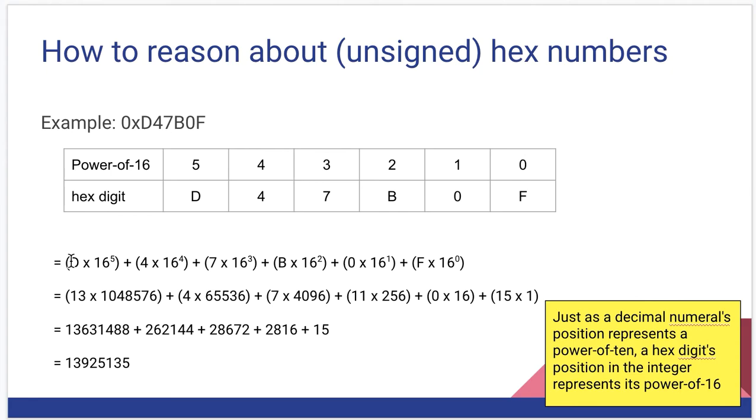In decimal terms, we change that D to 13 times the 5th power of 16, 4 times the 4th power of 16, 7 times the 3rd power of 16. B is 11 in decimal, so 11 times 16 to the 2nd power, that's 256. We have 0 at the 1st power, which would be 0 times 16. Then we have F times 16 to the 0th power, which is 15 times 1. Add all that stuff together, and this is the unsigned decimal equivalent of that hexadecimal number.